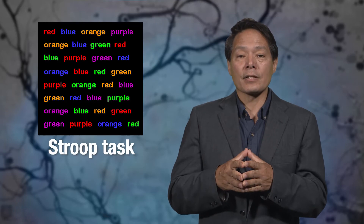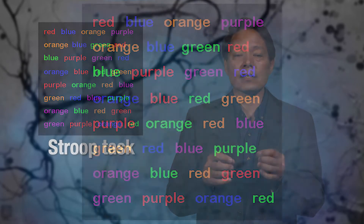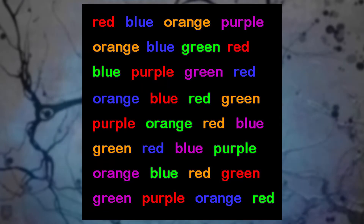A famous example in this regard is the so-called Stroop task. The task is to say out loud the color of a word without reading it. When there's no conflict between the color of the ink and the written word, this is easy. But watch what happens when you try to name the colors in a list as fast as you can without reading the words. Stop the video now and try to name all the colors of these words until the end of the list, and restart the video when you reach the end of the list.